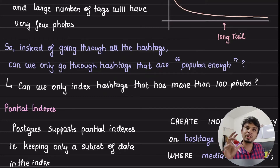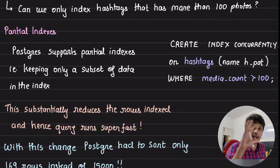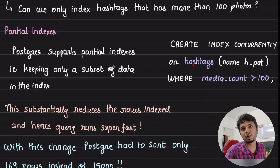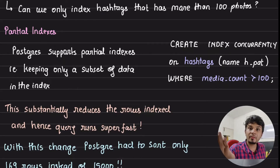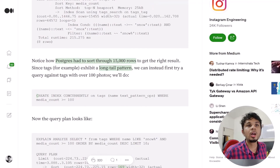This is a classic case for partial indexes. Postgres supports partial indexes, meaning that although your table has all the data, when creating an index you can index only a subset. For example: CREATE INDEX CONCURRENTLY ON hashtags (name) WHERE media_count > 100. Even if the table has a million rows, the index only contains rows where media_count exceeds 100 — making it substantially smaller and lightning fast.